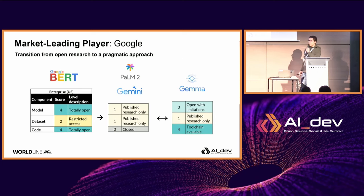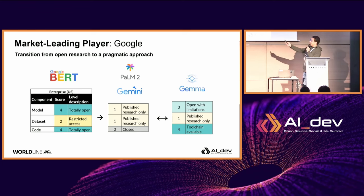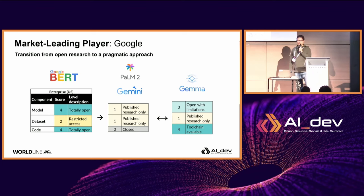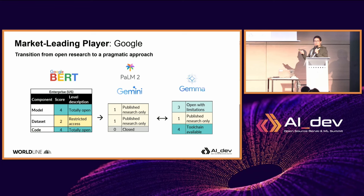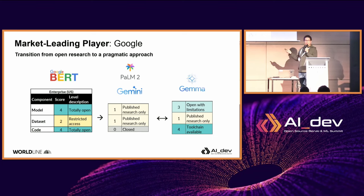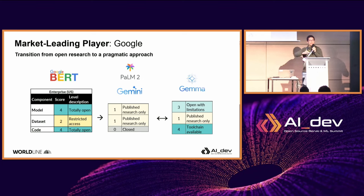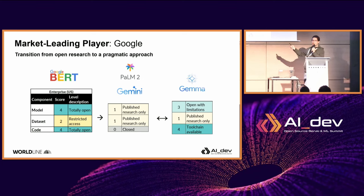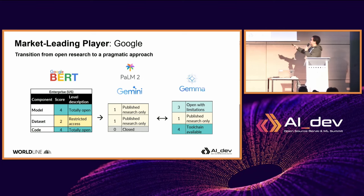Another big player is Google. They changed a lot of things in 2017 with 'Attention Is All You Need.' They did the open-source implementation called BERT — the model was open, the code also, but dataset access was restricted. Then they changed with the hype, starting with the new generation with PaLM2 first and then Gemini, where it was basically closed — published in a research paper, but closed. More recently, they changed strategy and released in parallel a model they call open, called Gemma.